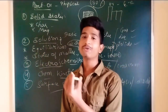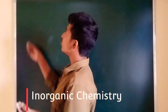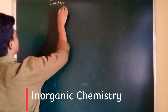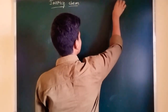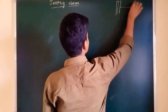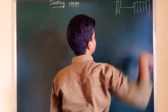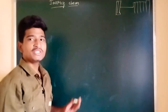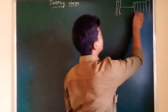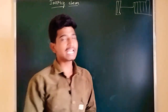Next I will move to the chapters under inorganic chemistry. When we say inorganic chemistry, you must imagine the periodic table — groups 13, 14, 15, 16, 17, and 18. Inorganic chemistry is the study of the elements present in the periodic table.